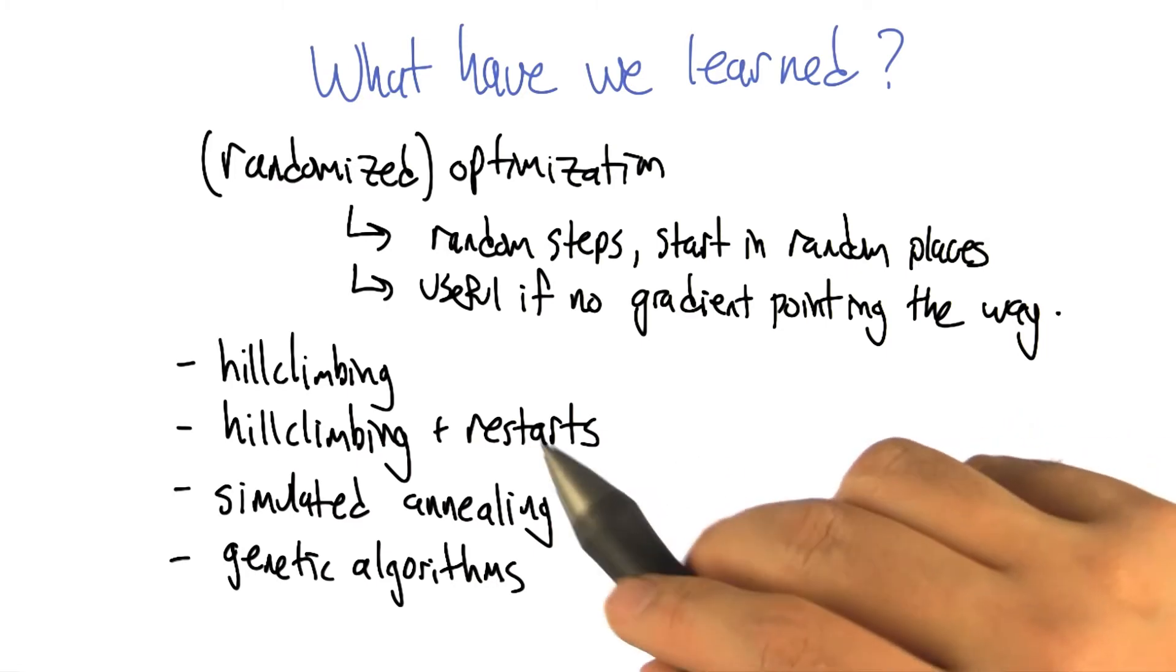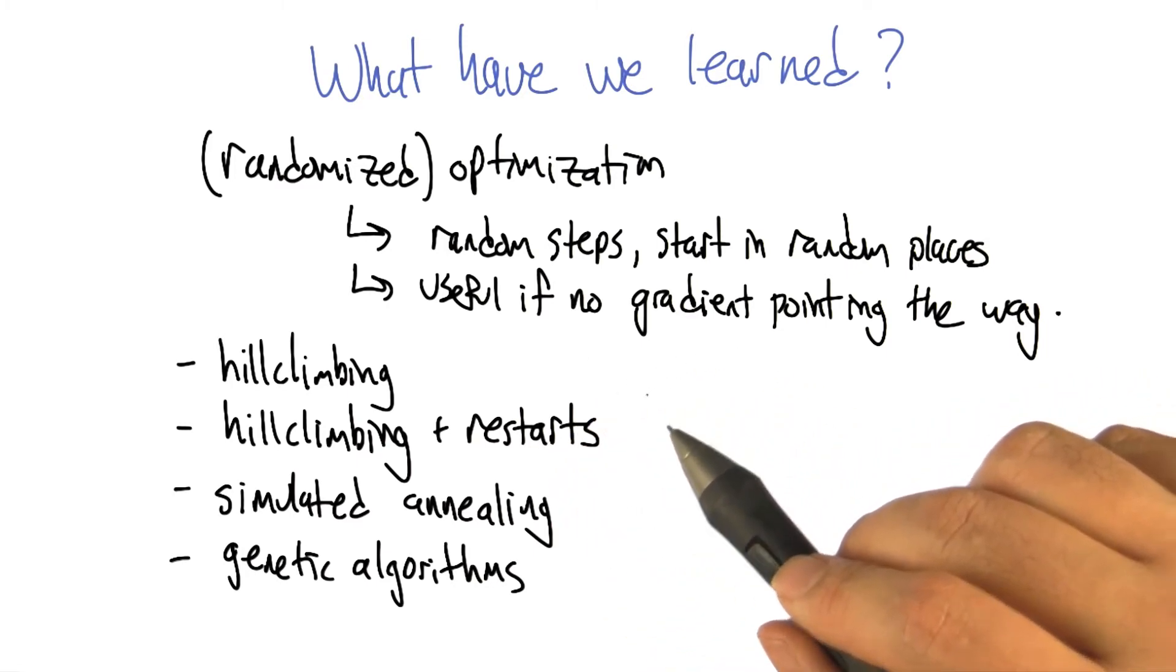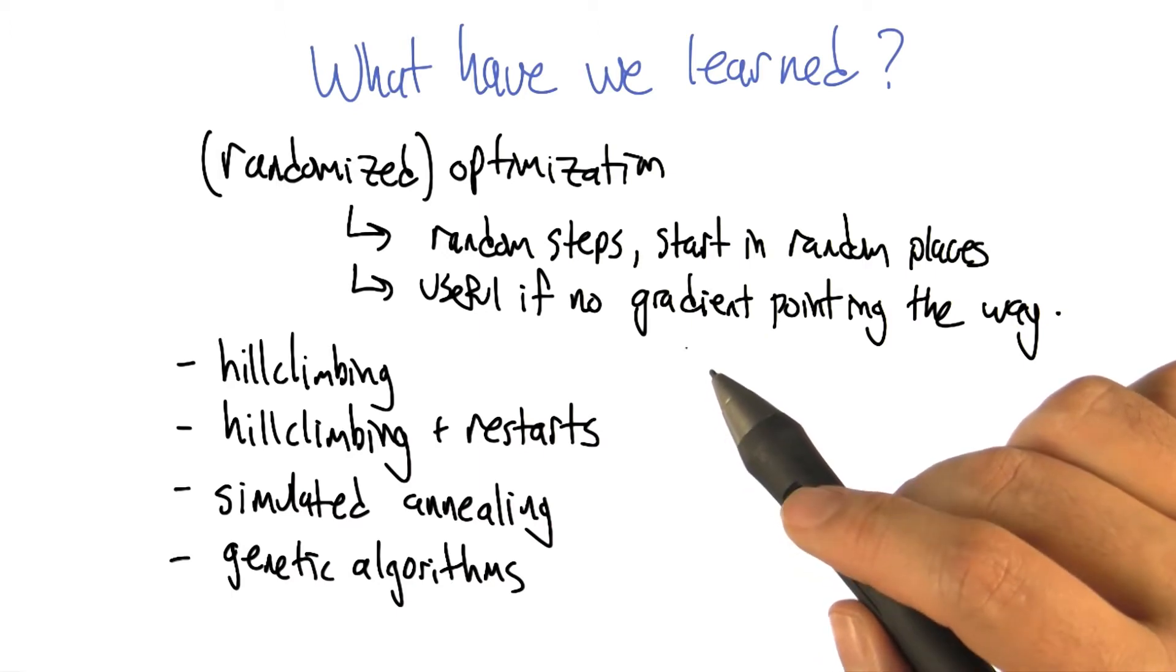Later in this particular subunit, we're going to be talking about finding good clusterings. And so this notion of finding something that's good, finding a way to be optimal, is pervasive throughout machine learning. Well, that makes sense.